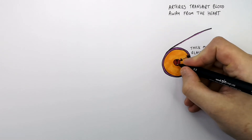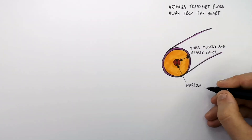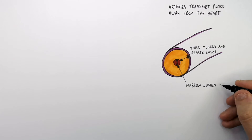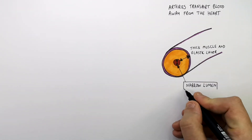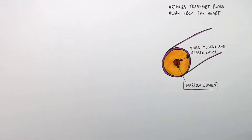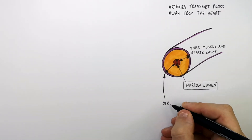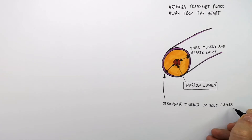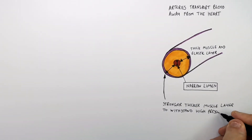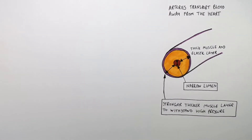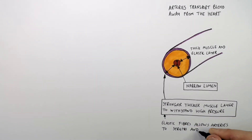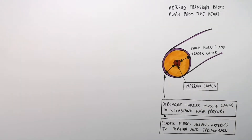It's got a narrow lumen, which increases the blood pressure through which blood can flow. The thick muscle and elastic layer is because arteries need stronger, thicker muscle layers to withstand the high pressure. The elastic fibres allow the arteries to stretch and spring back to their normal shape — otherwise, the high blood pressure would cause them to expand and not return to their normal shape.